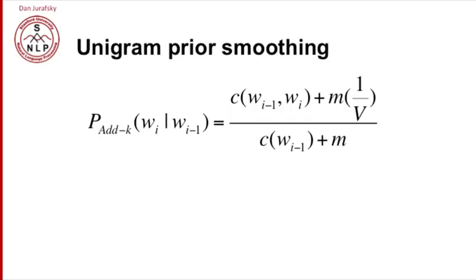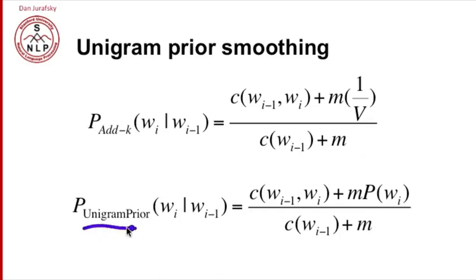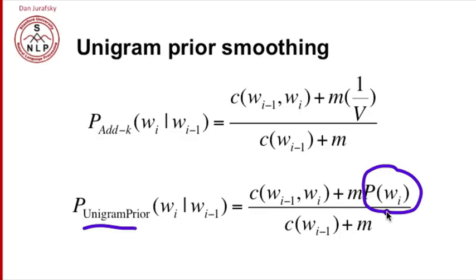When we write it this way, we can see that what we're doing is adding to every bigram a constant related to 1 over the vocabulary size. Instead of doing that, we could add a constant related to the unigram probability of the word we're backing off to. The unigram prior smoothing algorithm is an extension of add-k that adds something about the unigram probability, making it really a kind of interpolation — adding a count and some function of the unigram probability to the bigram count.